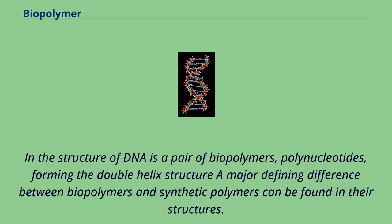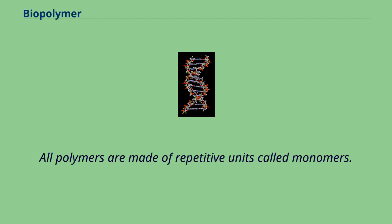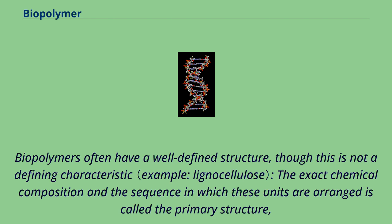In the structure of DNA is a pair of biopolymers — polynucleotides — forming the double helix structure. A major defining difference between biopolymers and synthetic polymers can be found in their structures. All polymers are made of repetitive units called monomers. Biopolymers often have a well-defined structure, though this is not a defining characteristic. The exact chemical composition and the sequence in which these units are arranged is called the primary structure.